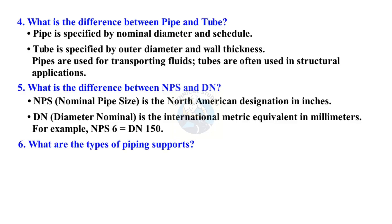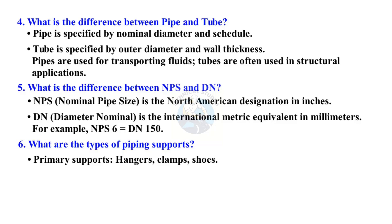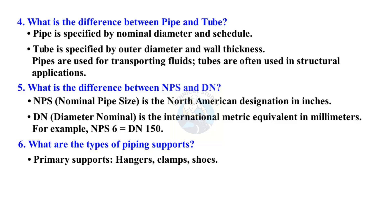What are the types of piping supports? Primary supports include hangers, clamps, and shoes. Secondary supports include guides, anchors, and snubbers. They control pipe movement due to thermal expansion, vibration, and pressure.